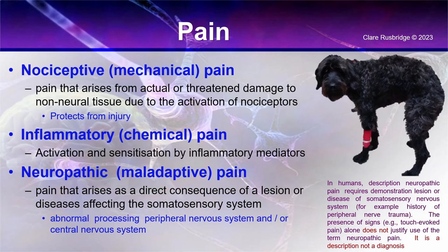And then we have neuropathic or maladaptive pain — pain that arises as a direct consequence of a lesion or disease affecting the somatosensory nervous system, implying abnormal processing through either the peripheral nervous system or the central nervous system (spinal cord and brain). In humans, it's important to remember that neuropathic pain is not a diagnosis — it's a description. You need to establish where the lesion is and have a more firm diagnosis than just touch-evoked pain or a history of burning.